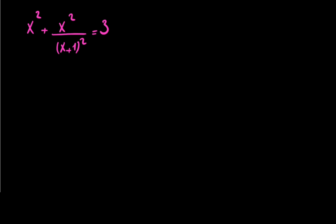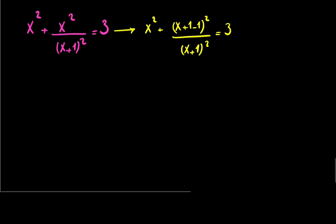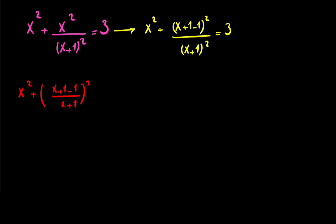For the first step, look at this equation. The first polynomial was x squared, and on the top it's better to add plus and minus 1 — so plus and minus 1 squared — divided by x plus 1 squared, equal to 3. Nothing will change, because 1 minus 1 equals 0. So you can now write it as x squared plus x plus 1 minus 1, divided by x plus 1 squared, equal to 3.